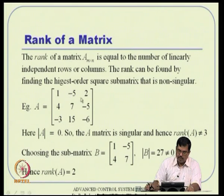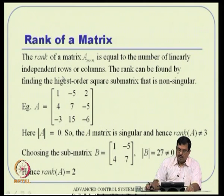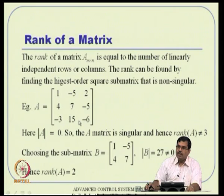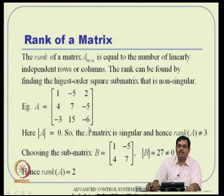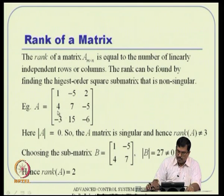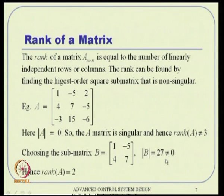For example, take a 3 by 3 matrix. The highest-order sub-matrix is the matrix itself. If its determinant is zero, the matrix is singular and the rank cannot be 3. We then check all 2 by 2 sub-matrices. Selecting one sub-matrix B with entries [1, -5; 4, 7], its determinant is 7 + 20 = 27, which is not zero. So we found a 2 by 2 sub-matrix with non-zero determinant, and the rank is 2.